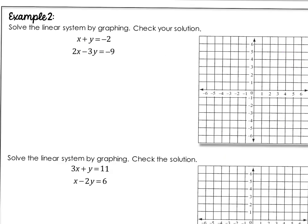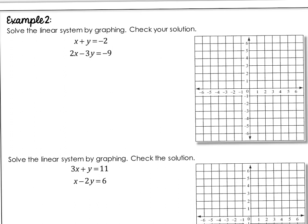To do these problems, you may want different colors of highlighters or colored pencils if that helps, and you will definitely want a straight edge because you can't find a good point of intersection if you're freehanding your lines. Step 1: write each equation in slope-intercept form. I'm going to take my first equation, X plus Y equals negative 2, and subtract X to get it on the other side. So I have Y equals negative X minus 2.